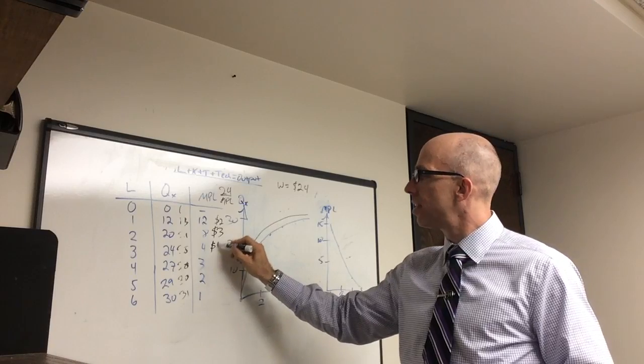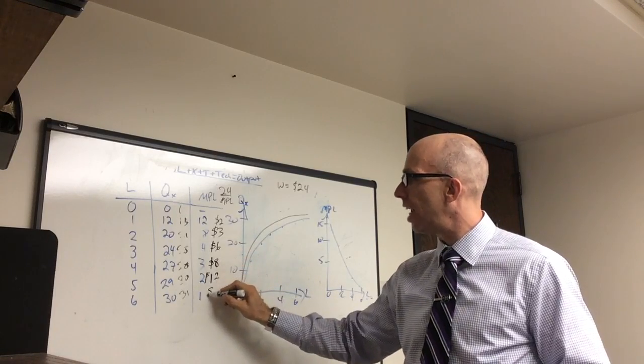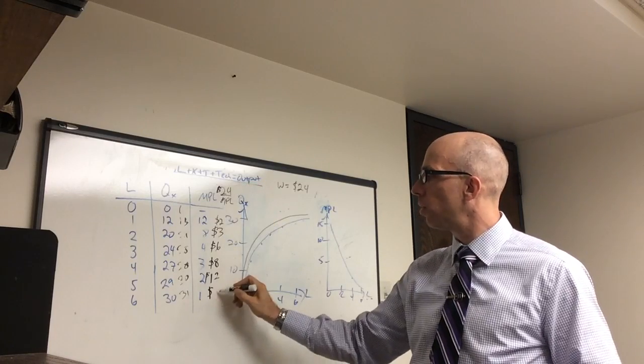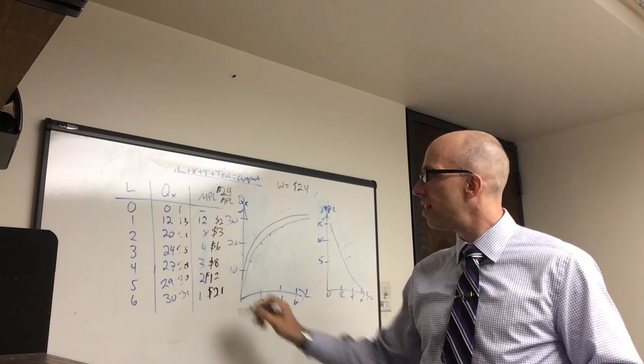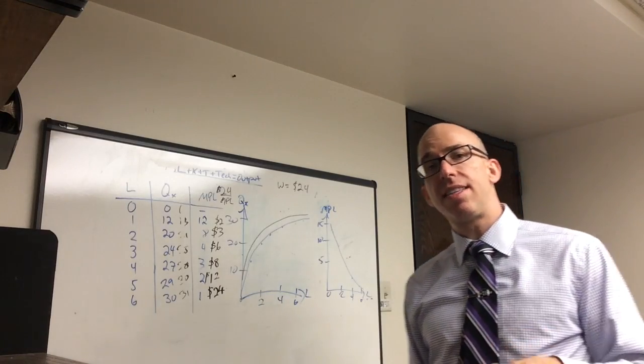24 divided by 8 is 3. 24 divided by 4 is 6. 8, 12. Finally, I pay $24 to only produce 1. That means this last item costs $24. That's extremely expensive.